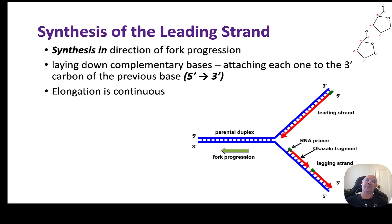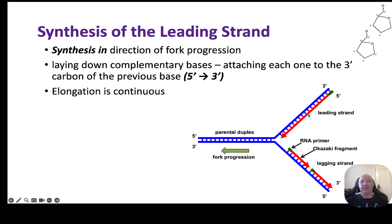Let's talk about synthesis of the leading strand first. DNA helicase unzips the parental strand, and the leading strand elongates in the same direction as the fork progression. We lay down complementary bases, attaching each one to the three prime carbon of the previous base, heading in the direction of the fork. Elongation on the leading strand is continuous.